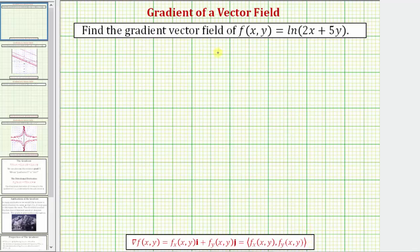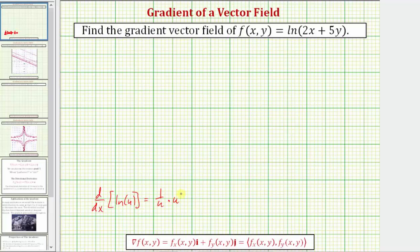So let's find the gradient vector field, then we'll talk about what it tells us about the function, and then we'll also look at this graphically. Because f(x, y) is equal to the natural log of the quantity (2x + 5y), we'll be using the derivative formula: the derivative with respect to x of natural log u is equal to one over u times u prime.